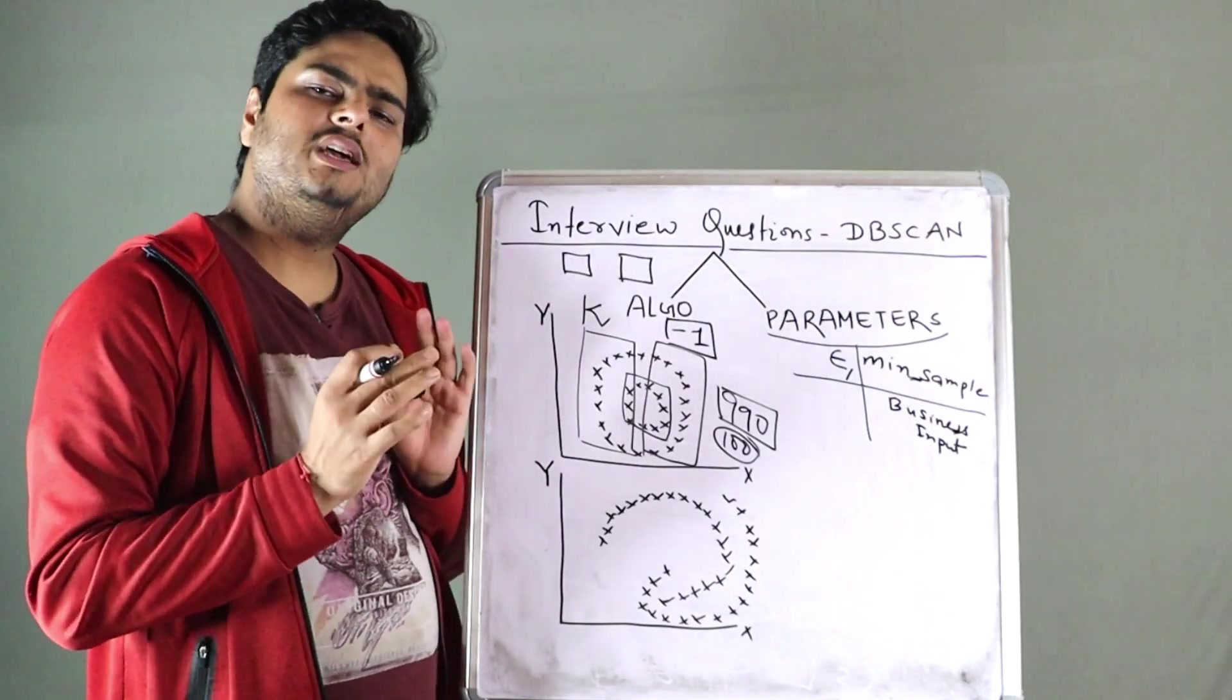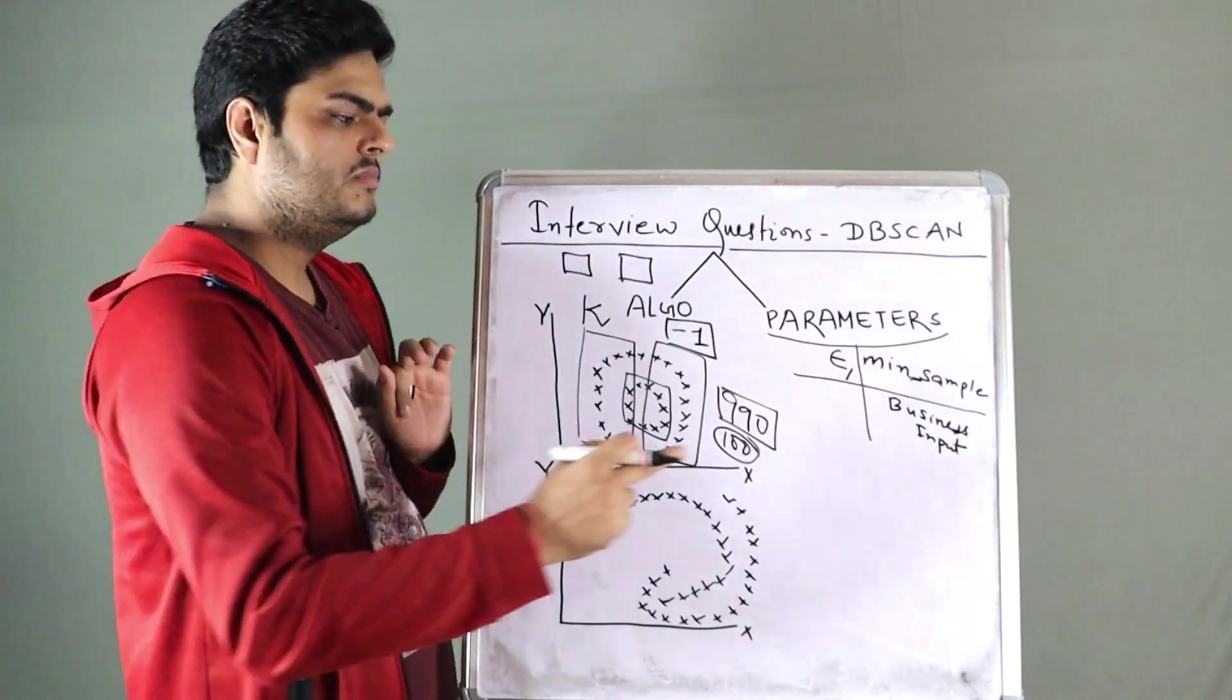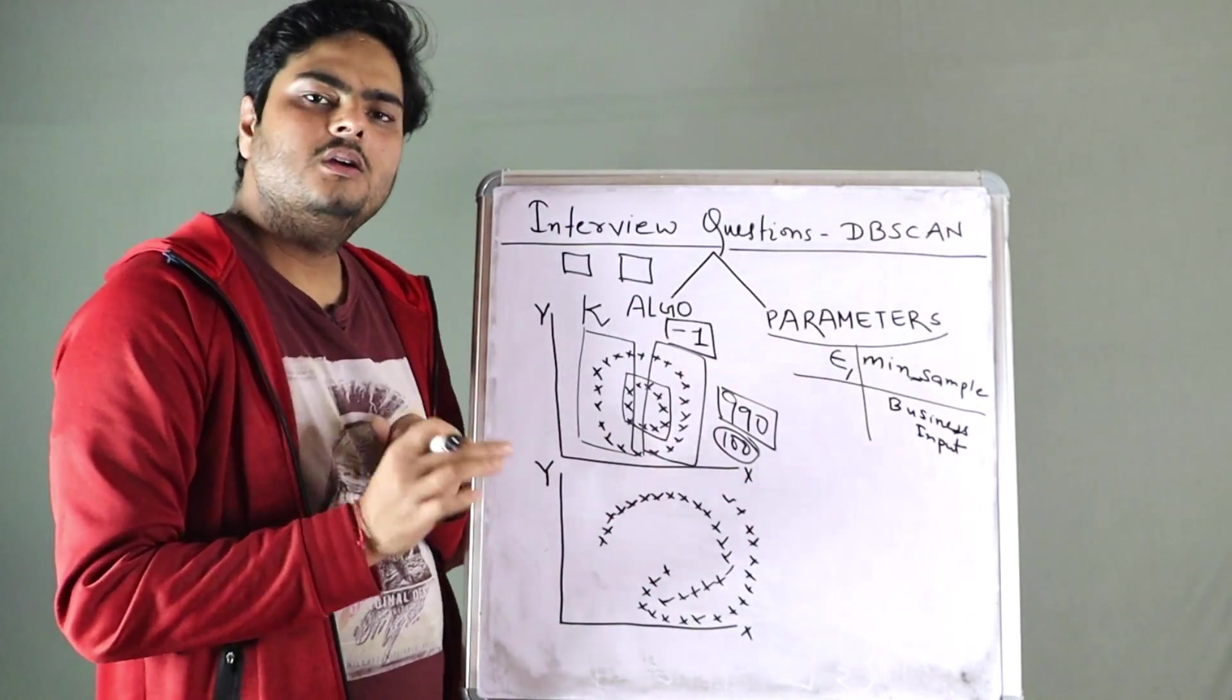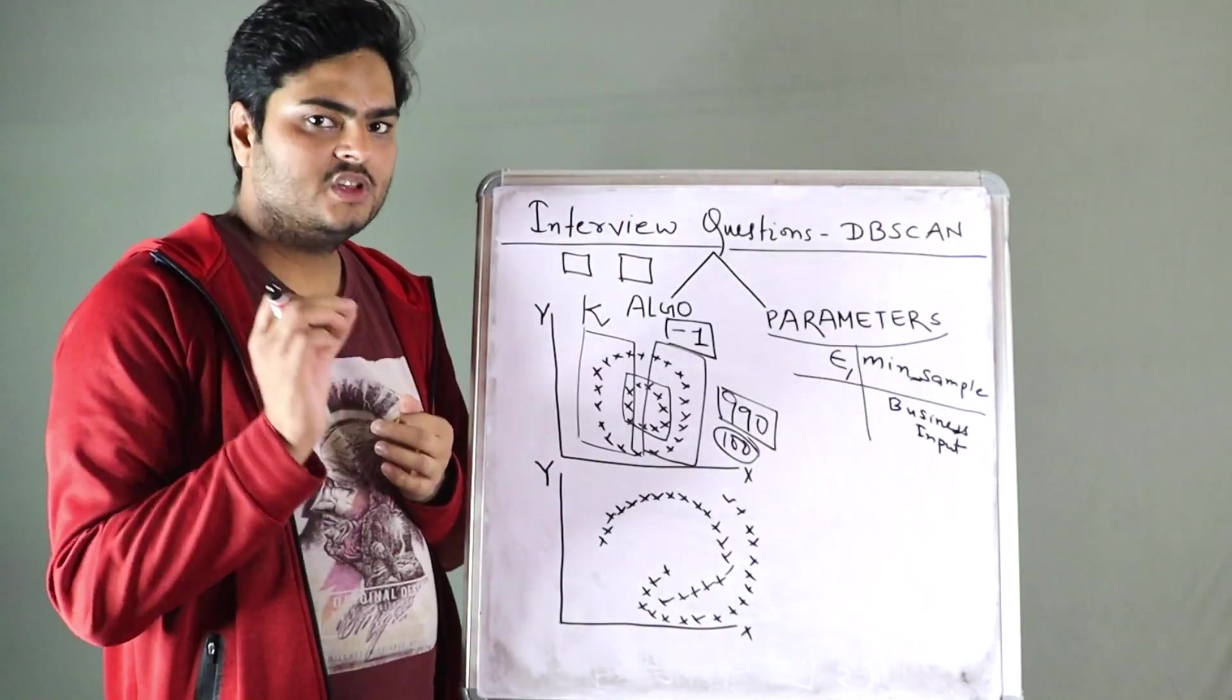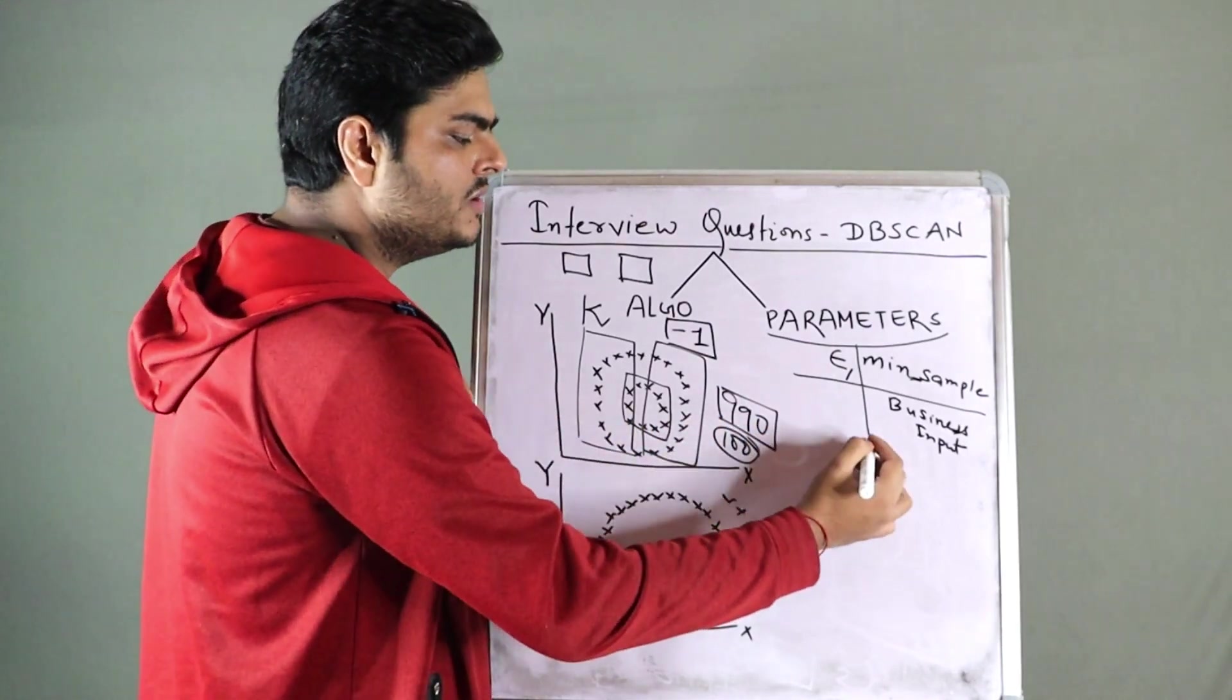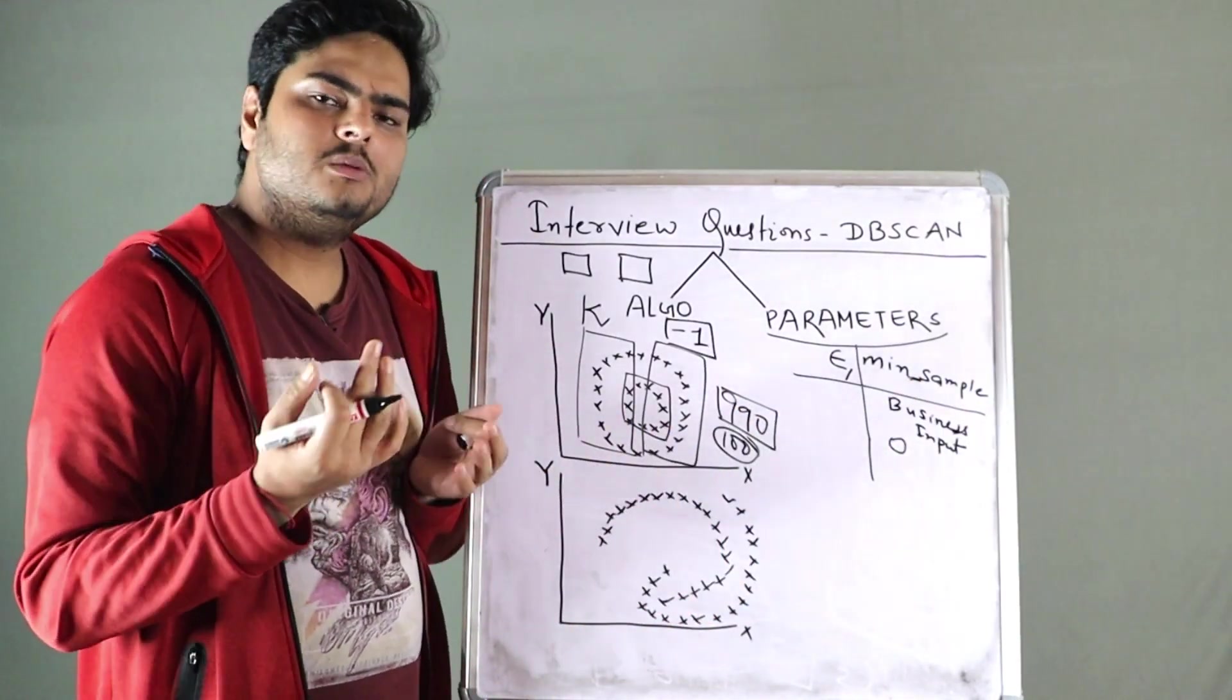For example, if I sell t-shirts, I can say that, you know, roughly 100 people may be similar. So in that case, my minimum sample becomes 100. If I know business, if I don't know business, then what happens? So here, you cannot have minimum sample as zero. Why? Because it doesn't make any sense. You cannot call zero points as one cluster.